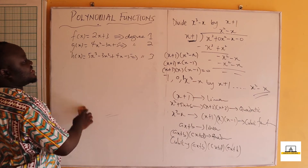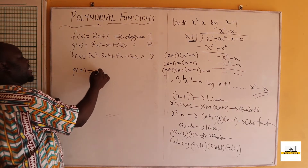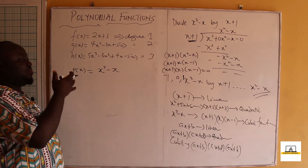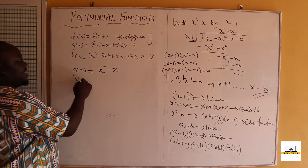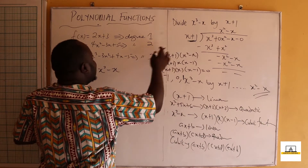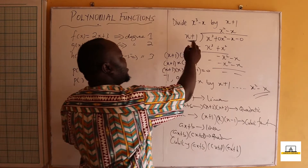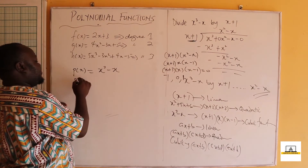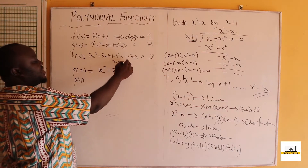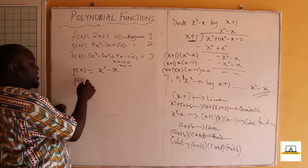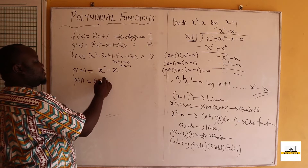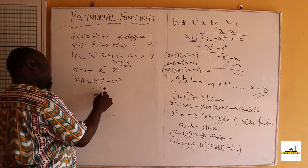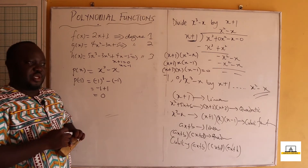This leads us to the remainder theorem and factor theorem. For p(x) = x³ - x, if we want the remainder when dividing by x + 1, we equate x + 1 = 0 to get x = -1, then evaluate p(-1): (-1)³ - (-1) = -1 + 1 = 0. The remainder is zero, confirming x + 1 is a factor.